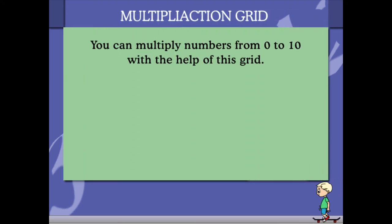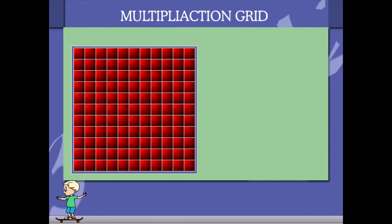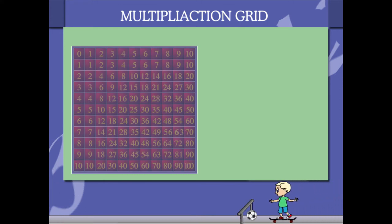Multiplication grid: you can multiply numbers from 0 to 10 with the help of this grid. Look, here is the grid. It has squares containing numbers. Let's use it to get the product of 5 and 6. This means 5 into 6.